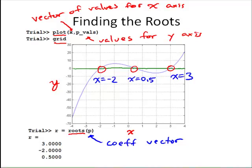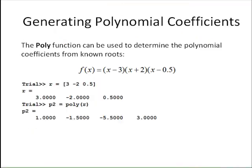Let's take a look at once we have those roots, can we go the other way? So those roots, again, mean that that polynomial can be defined as the product of x minus 3 times x plus 2 times x minus 0.5. So those are the roots of the polynomial.